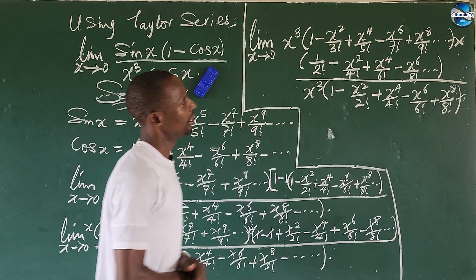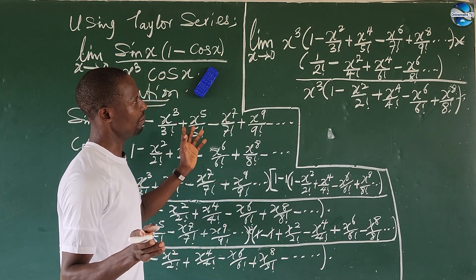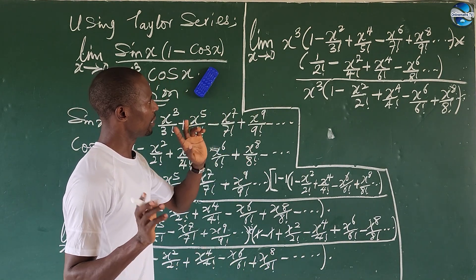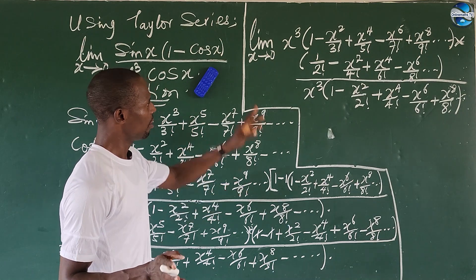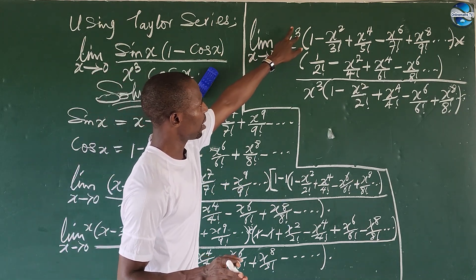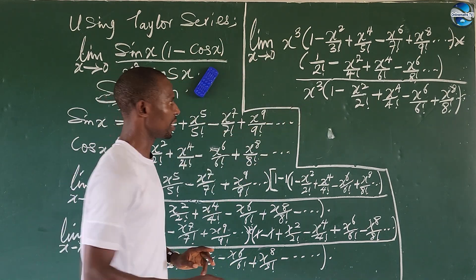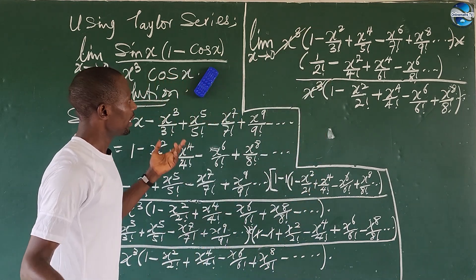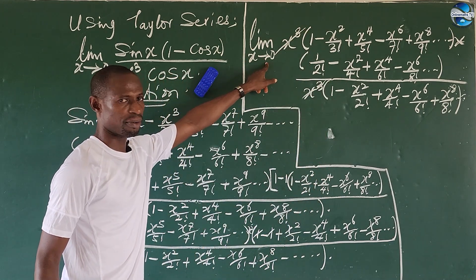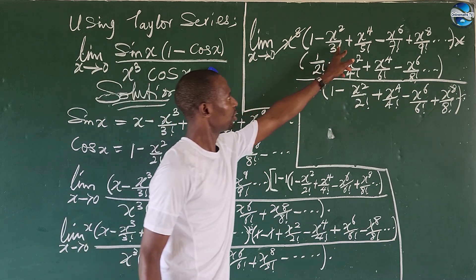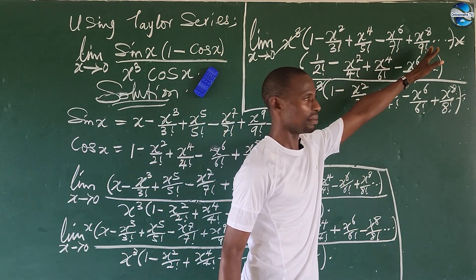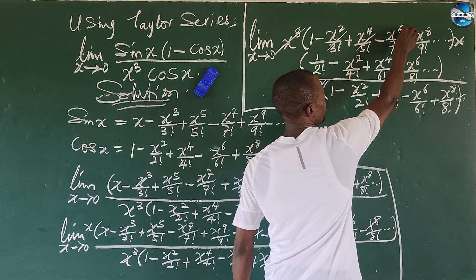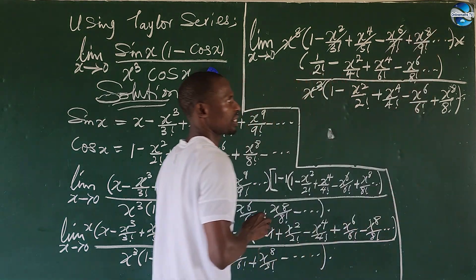Now looking carefully at the expression: we have x to the power of three in the numerator and x to the power of three in the denominator, so they cancel. As x approaches zero, the higher-order terms — x to the power of two, x to the power of four, x to the power of six — all go to zero.